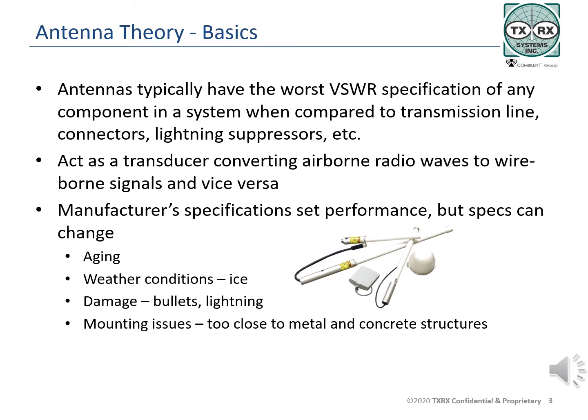Antennas have the worst specification of any part in LMR transmission systems when compared to transmission line, connectors, lightning arrestors, filters, TTAs, and other components, and yet operate, allowing communication between radios continually.